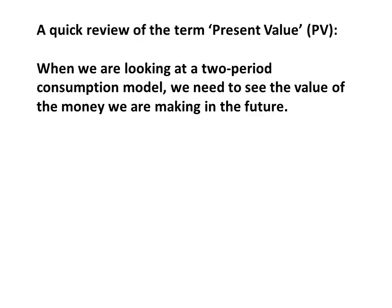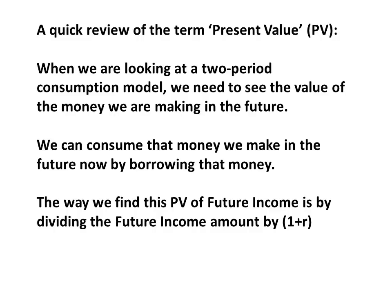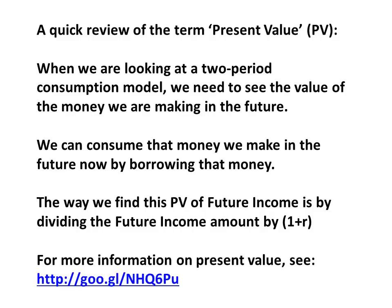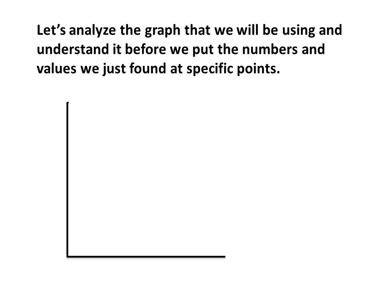There's going to be a website in a minute that you can go to for extra help if you're not too familiar with present value. When we're looking at a two-period consumption model, we need to see the value of the money we are making in the future, because we can consume that money now by borrowing against our future income. The way we find the present value of future income is by dividing the future income by 1 plus R. If we want to see how much we save, we take our current income and multiply it by 1 plus R instead of dividing by it. If you need more information on present value, Khan Academy has a couple of great videos — you can use the short Google link provided to view those.